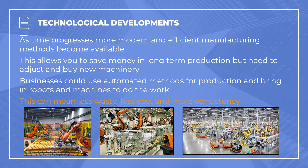Starting with technological developments. As time progresses, more modern and efficient manufacturing methods become available, along with different materials we can use to manufacture products. These different techniques allow us to save money on production costs, though you'll also need to adjust and buy new machinery. Businesses could use automated methods for production, bringing in robots and machines to do the work, resulting in less waste, less costs, and more consistency over time.